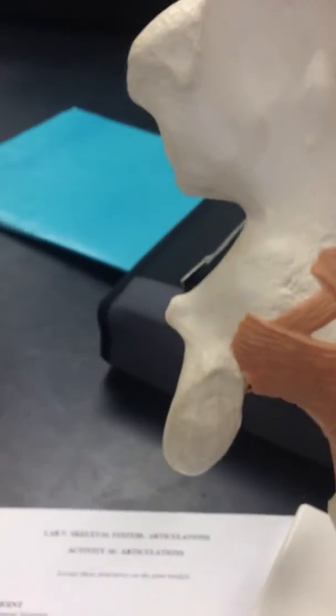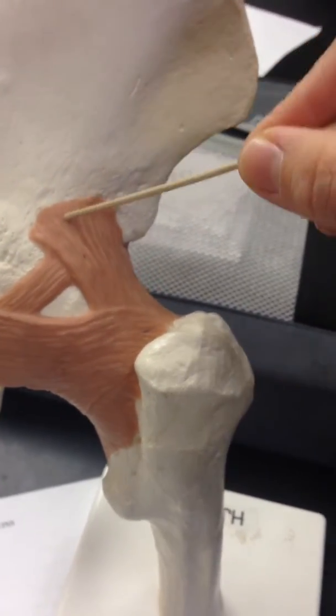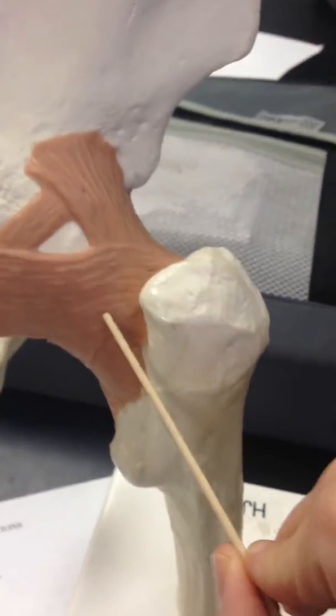Right here, in this anterior view, we have the iliofemoral, and then we also have, right here, the ischiofemoral ligament, right beside.